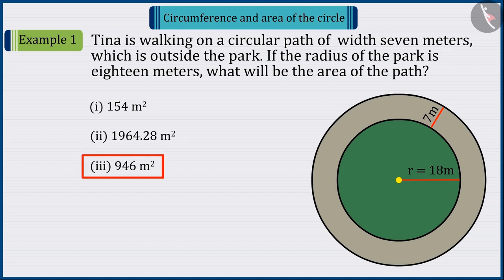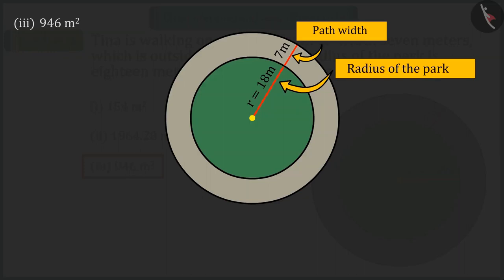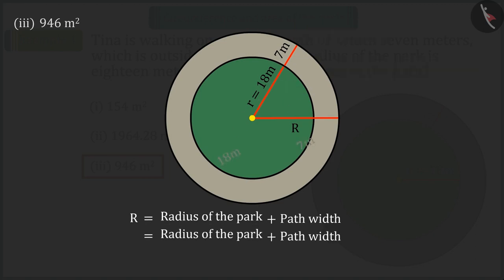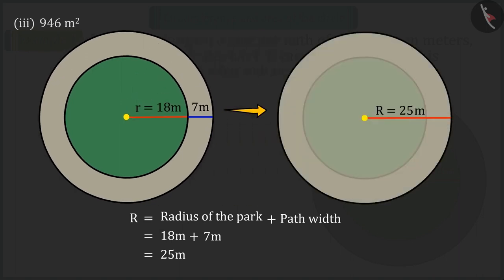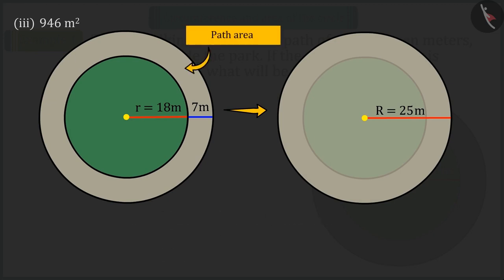Come, let's discuss option 3. Since it is given that Tina is walking on a 7 meters circular path, which is outside the park, so we can say that this circular path and the total radius of the park, that is r, will be 25 meters, which we would have displayed from this circle. So, can you find the area of the path from this? Come, let's see.